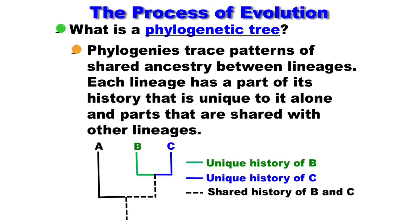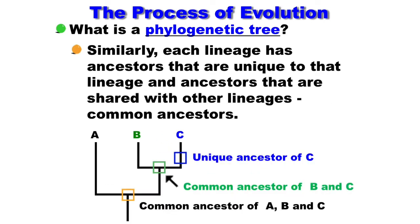Phylogenetics traces patterns of shared ancestry between lineages. Each lineage has a part of its history that is unique to itself and parts that are shared with other lineages. For example, here we have the unique history of C and the unique history of B. This part would be shared by both B and C, and this part would be shared by species A, B, and C. Similarly, each lineage has ancestors unique to that lineage and ancestors shared with other lineages — common ancestors.